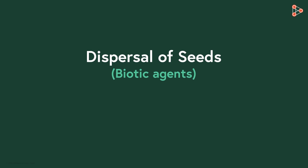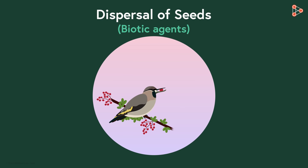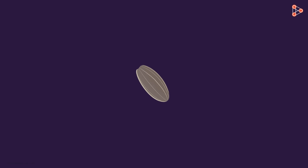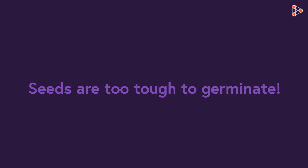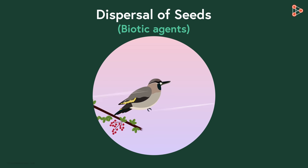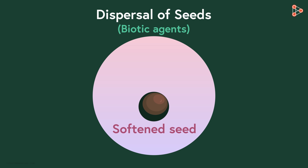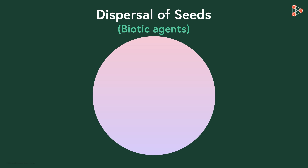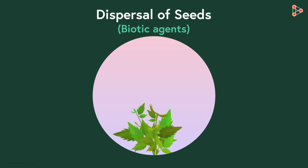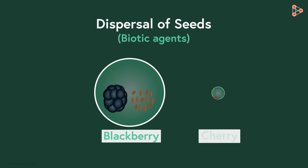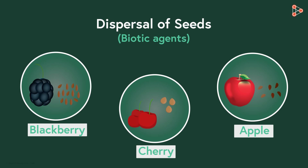Plants are even benefited by seed dispersal by animals. Take the simple example of birds — birds also relish on juicy fruits that have seeds within. In many cases, the seeds are too tough to germinate if planted directly into soil. When such a fruit is consumed by a bird, the seed does not get digested and is passed out. However, the hard seed cover softens due to the chemical activity of acids present in the bird's stomach. As the seed passes through the bird's gut, it gets soft, and when it drops on the ground and gets rooted, it becomes easy for the seed to germinate. Blackberry, cherry, apple, and many pulpy fruits have seeds that are dispersed by animals.